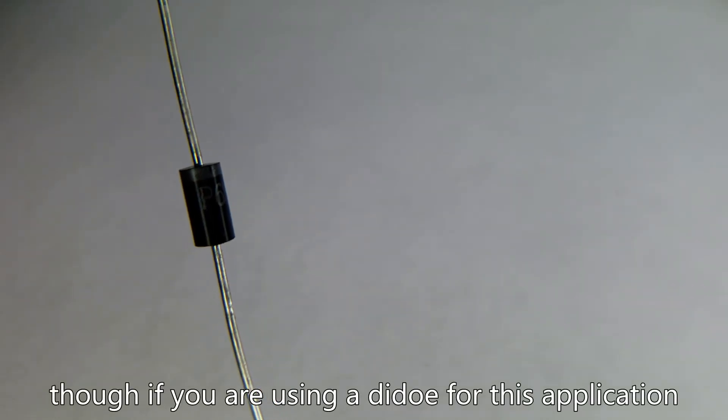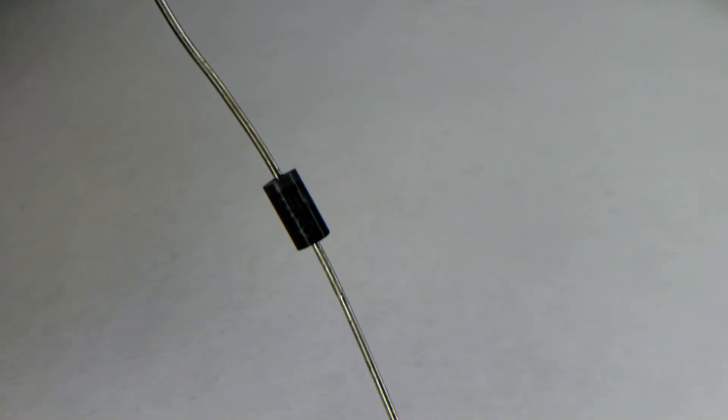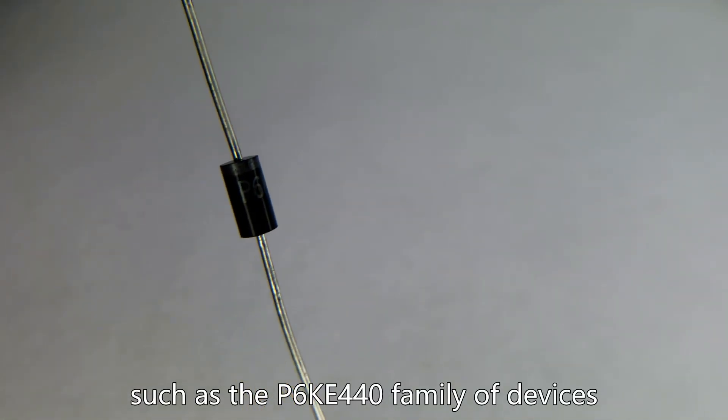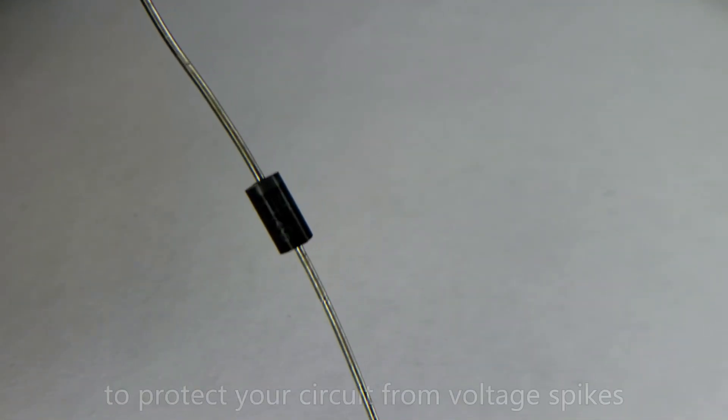Though, if you are using a diode for this application, it is better to use a transient voltage suppression device, such as the P6KE 440 to protect your circuit from voltage spikes.